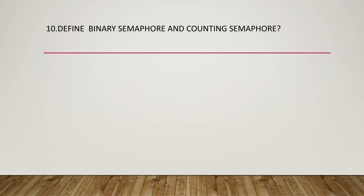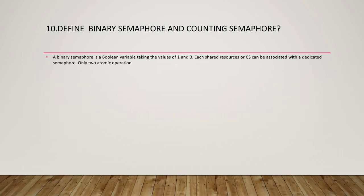A binary semaphore is a boolean variable taking the values of 1 and 0. Each shared variable, or critical section (CS), can be associated with a dedicated semaphore. Only two atomic operations, P and V, are used to access the CS represented by the semaphore, apart from initialization by setting X equal to 1.